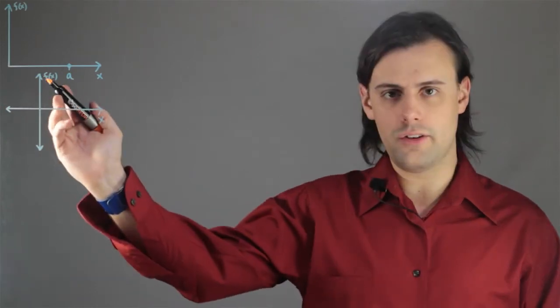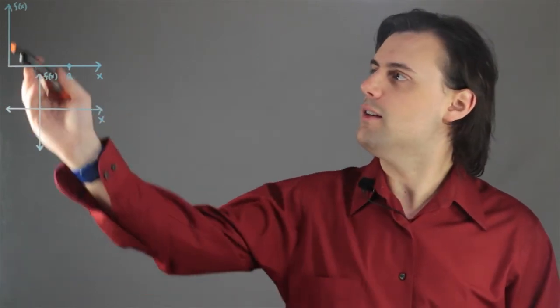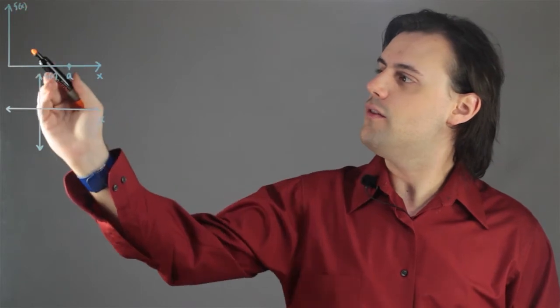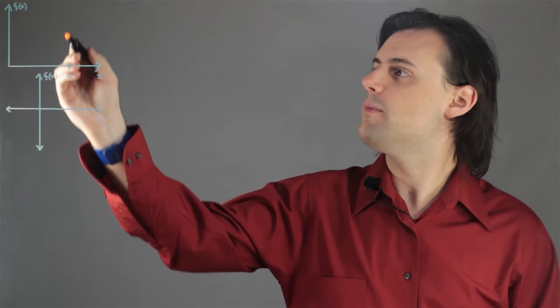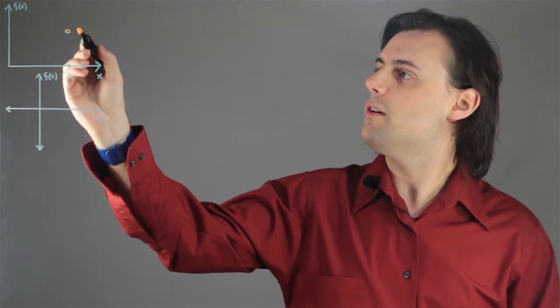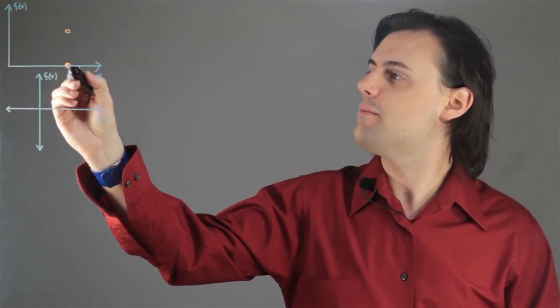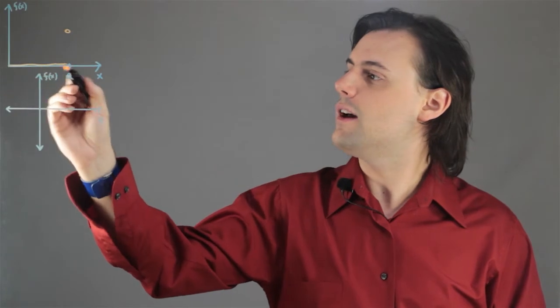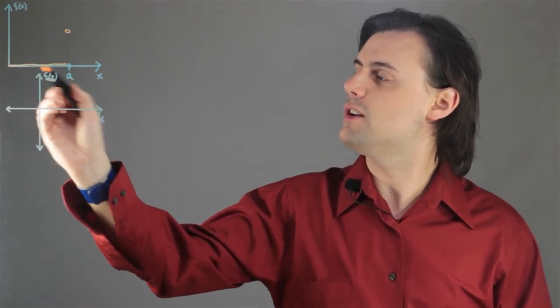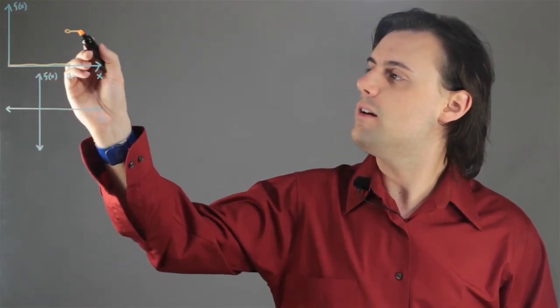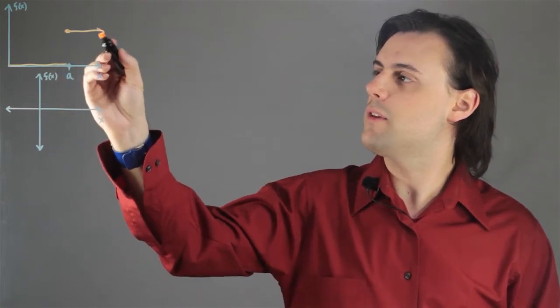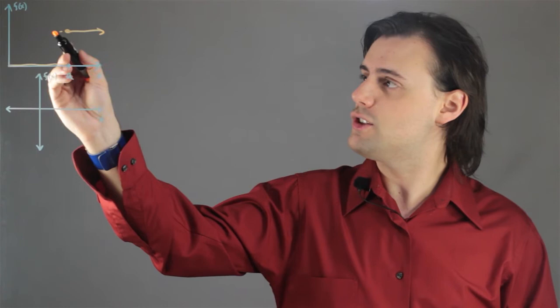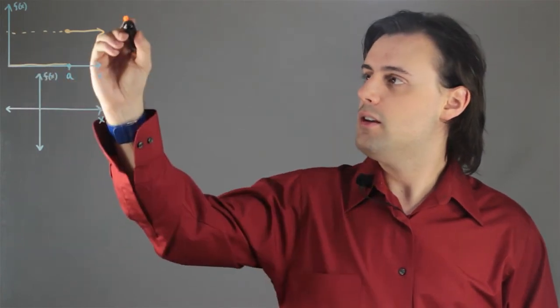So first we want to understand what a discontinuity is. A function f may be multivalued at certain points. For example, when x equals a, if x is less than a, the function is 0, but then after a, if x is greater than a, the function might actually be non-zero.